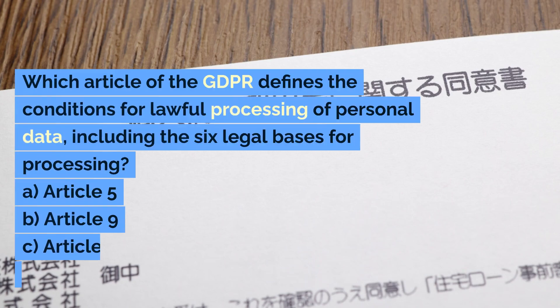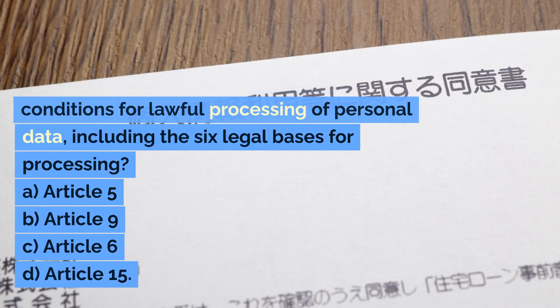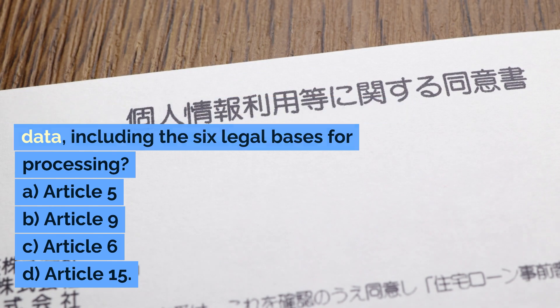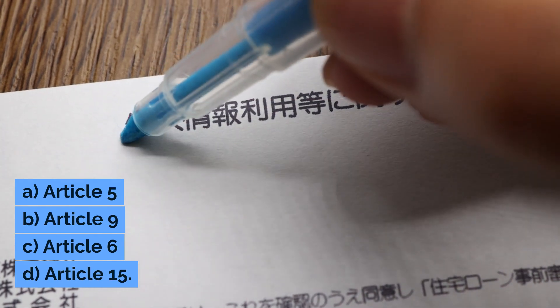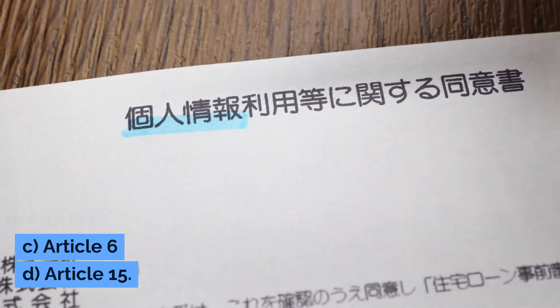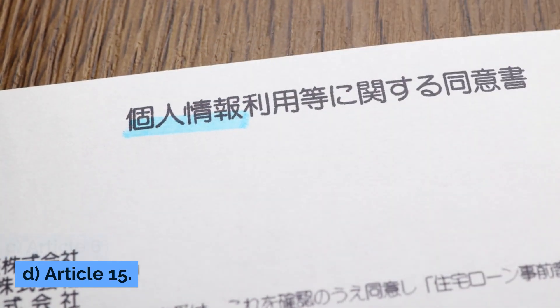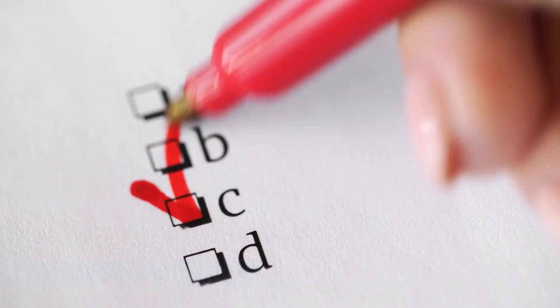Which article of the GDPR defines the conditions for lawful processing of personal data, including the six legal bases for processing? A. Article 5, B. Article 9, C. Article 6, D. Article 15. Correct answer: C. Article 6.